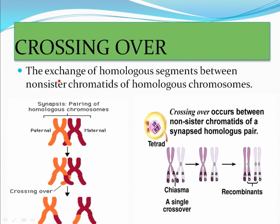So what is crossing over? As the name indicates, crossing over means to exchange or overlap. It is the exchange of homologous segments between non-sister chromatids of homologous chromosomes. In a homologous chromosome, two chromatids together are called sister chromatids. But the chromatids from two different homologous chromosomes are called non-sister chromatids. Crossing over occurs between non-sister chromatids of homologous chromosomes.